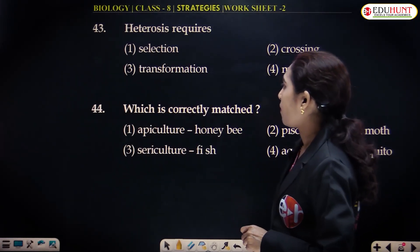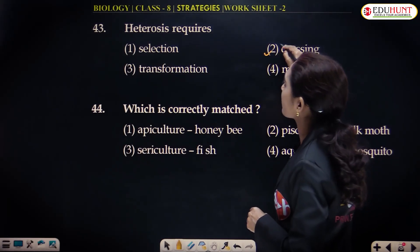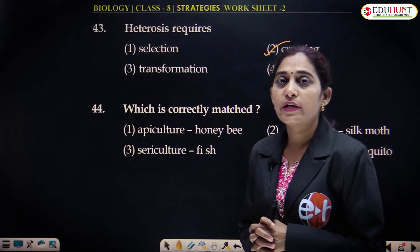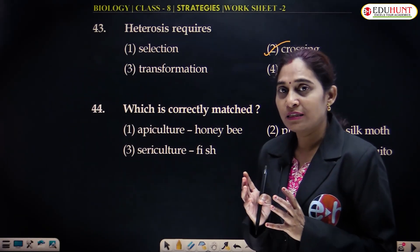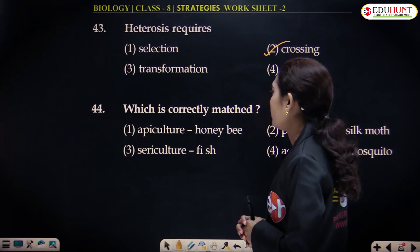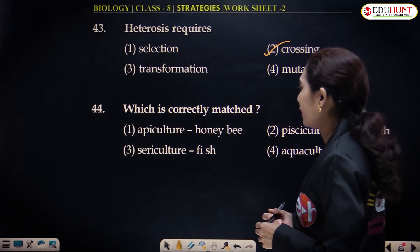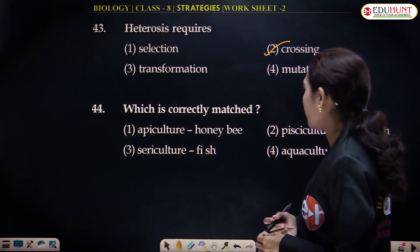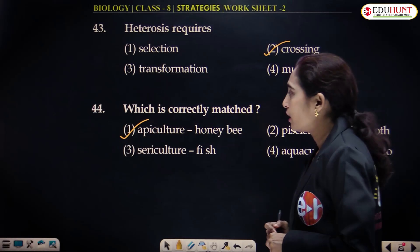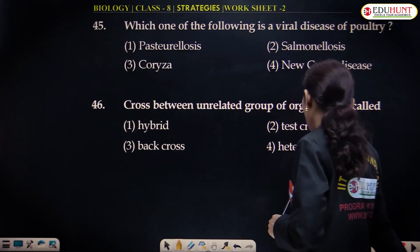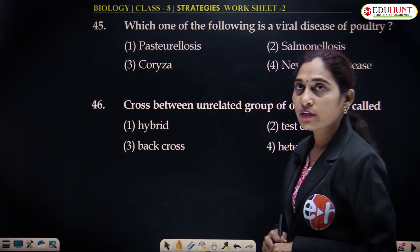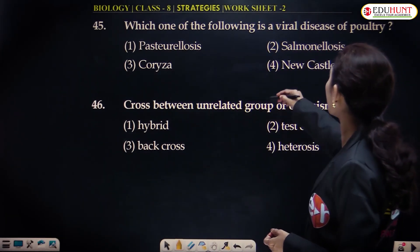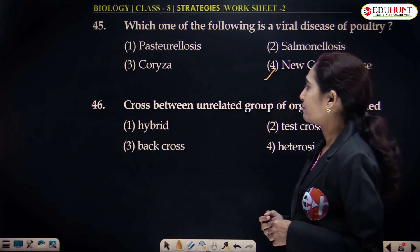Heterosis requires crossing of two inbred plants. Which is correctly matched? Apiculture — honeybee: rearing of honeybees is called apiculture, which is exactly correct. Newcastle disease, also called Ranikhet disease, is a viral disease of poultry.